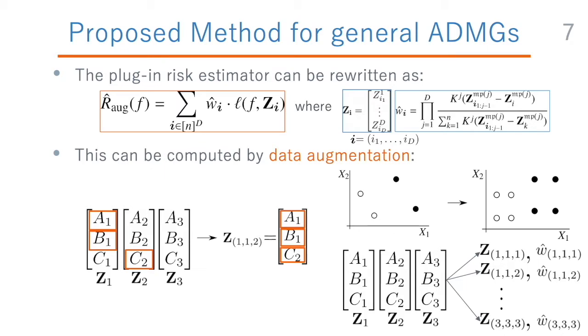The plug-in risk estimator is a weighted sum of the loss, and the summation is taken over the multi-index i with d elements, each running from 1 to n. During the summation, different pseudo-data points, denoted by bold zi, are input into the loss function. Please see the example at the bottom. Let's say the training data consists of three data points, z1 to z3.